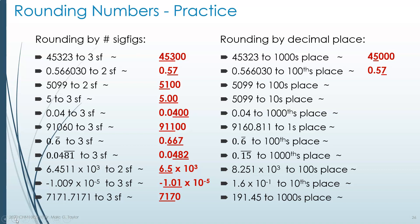5,099 to the hundredths place. The hundredths place is occupied by a 0. As we already know, rounding to that place gives 5,100. In other words, 5,099 is closer to 5,100 than it is to 5,000 — the hundred below.